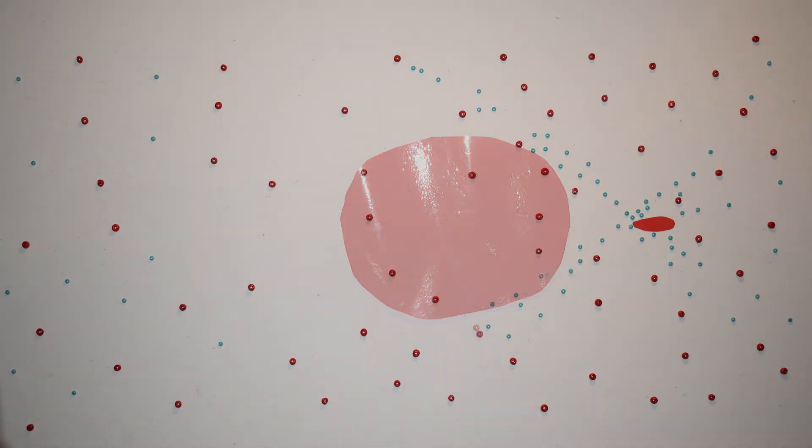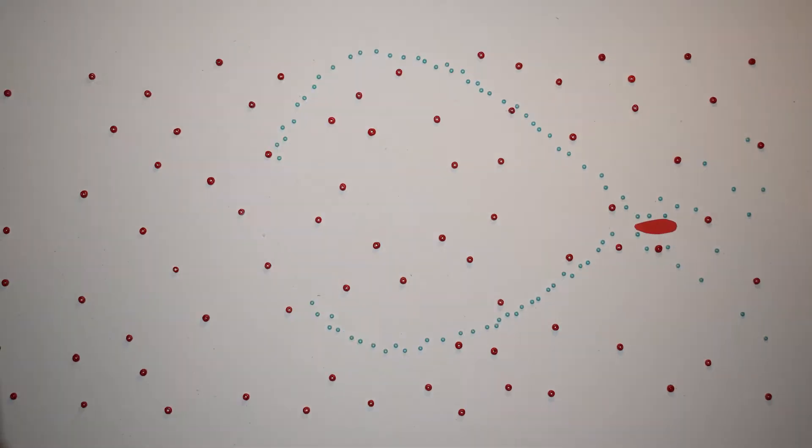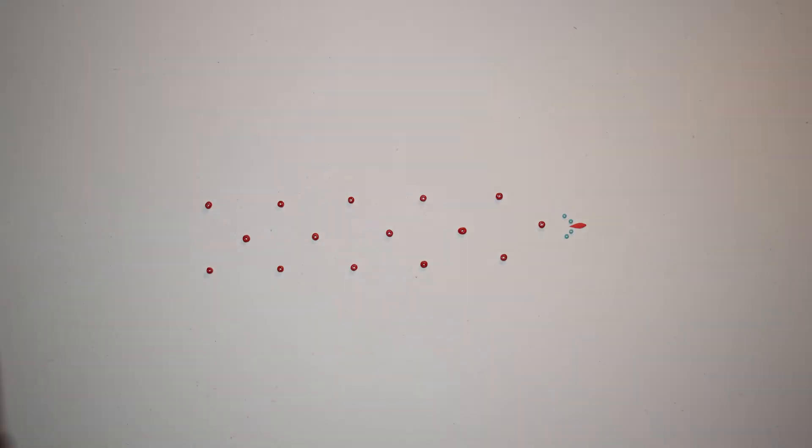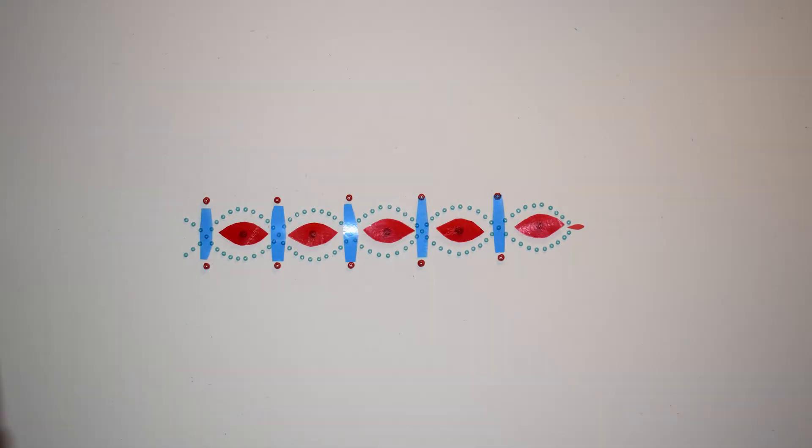This space charge will attract the blown electrons towards the axis again, where they will overshoot. This happens again and again until we have a periodic succession of charged areas, and every time charges are separated, an electric field is generated. In the end, a so-called plasma wake is left behind the beam.